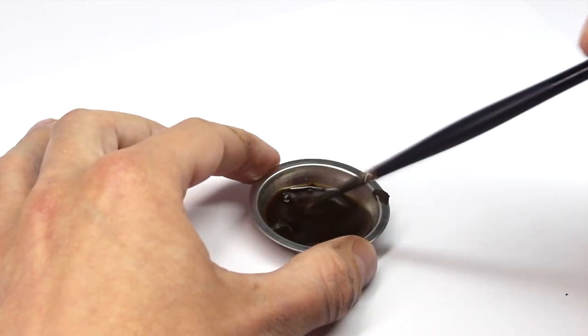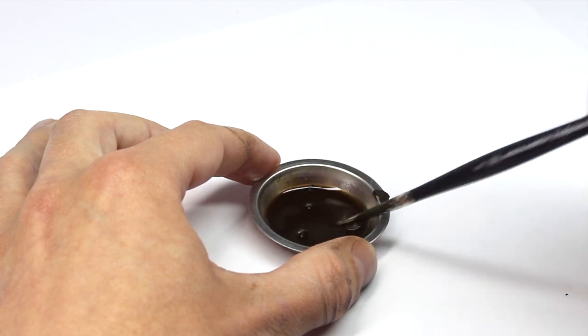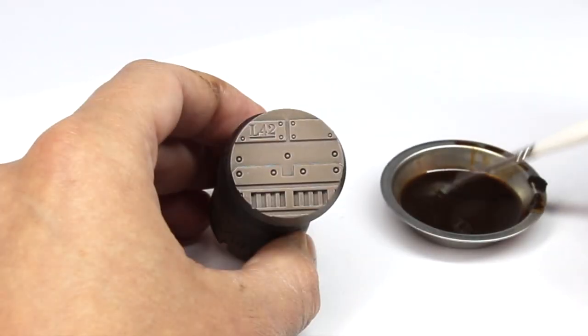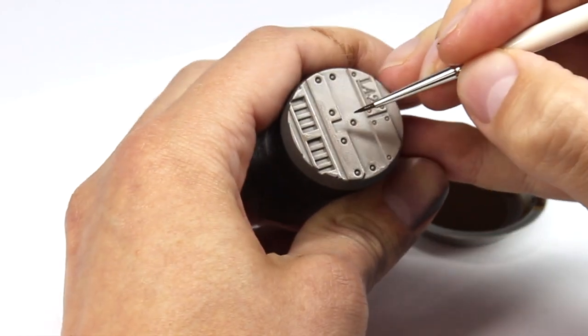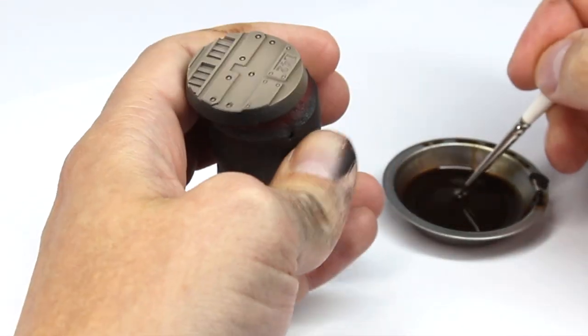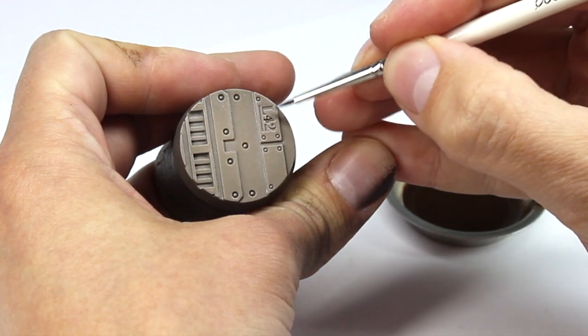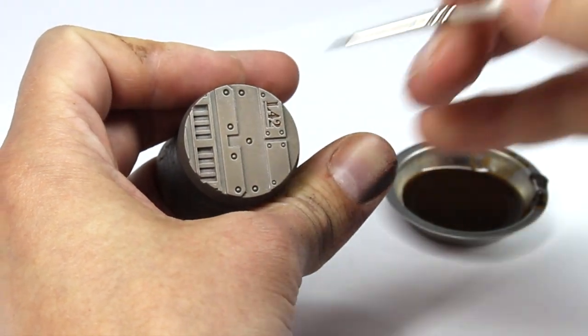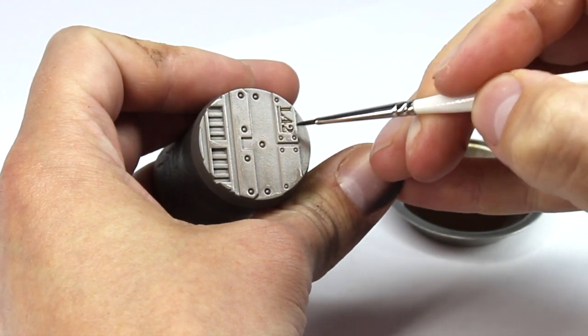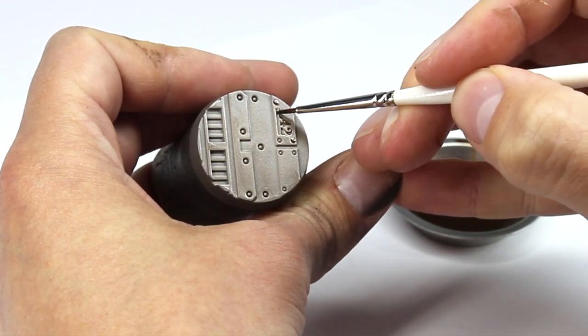Again, we can just check it against the side of the dish. And exactly like we've done before, we take our glossy base, load the wash onto our brush, touch off any excess and then carefully apply it to the details. And you can see just how easily this wash is running in to all of those recesses.